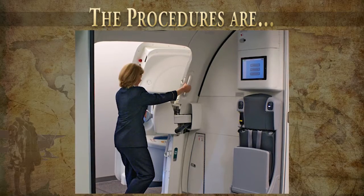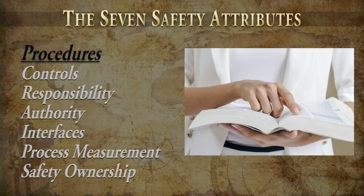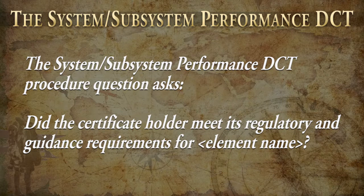As you can see, there's a distinct difference between a policy and a procedure. Every DCT question is based on one of the seven safety attributes. Procedures questions focus on the technical process and are based on FAA regulatory requirements and/or guidance. The System/Subsystem Performance DCT procedure question asks: did the certificate holder meet its regulatory and guidance requirements for the element name? This high-level SPDCT question includes every regulatory and guidance reference in the associated EPDCT.